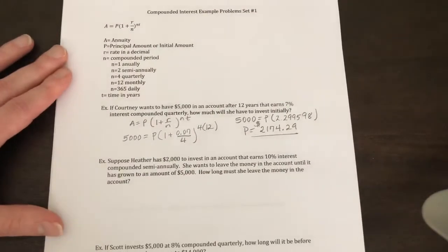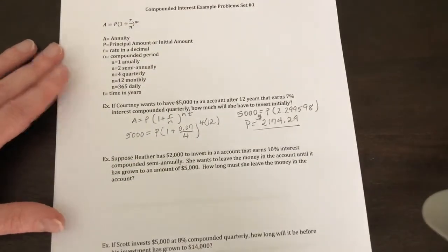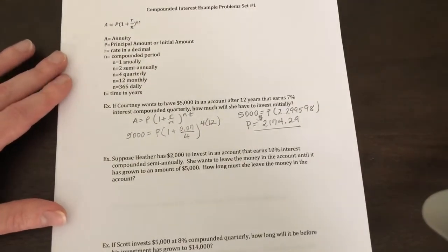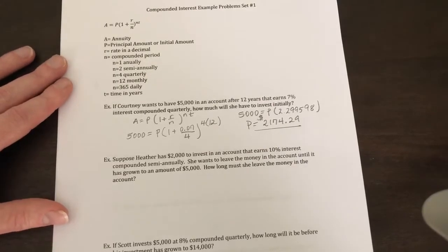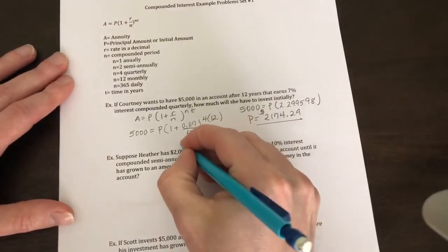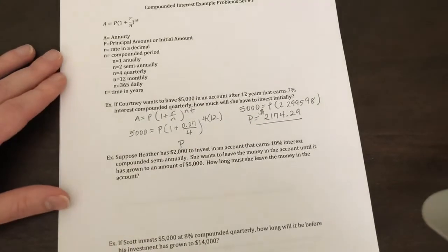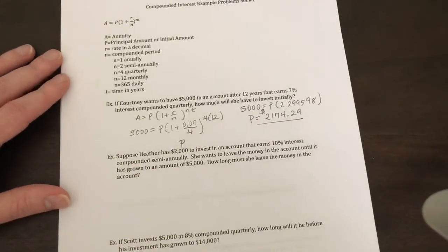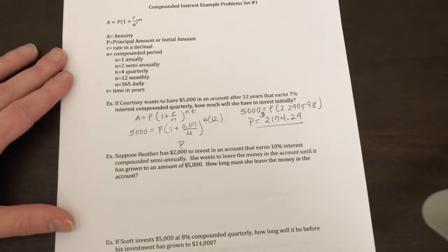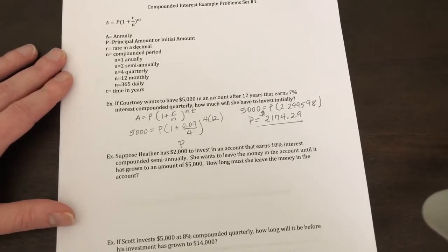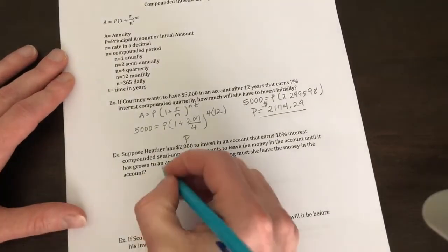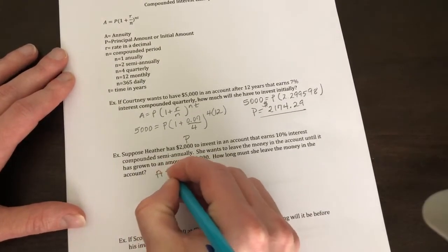Okay, so that's how I do a simple compounded interest problem. Suppose Heather has $2,000 to invest in an account that earns 10% interest. So this is going to be your principal amount, and it's compounded semi-annually, so your N would be equal to 2. She wants to leave the money in the account until it has grown to $5,000. How long must she leave it in the account?